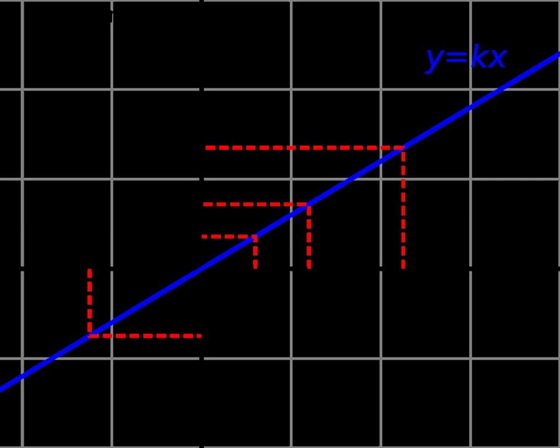If y is directly proportional to x, then the graph of y as a function of x is a straight line passing through the origin, with the slope of the line equal to the constant of proportionality k. It corresponds to linear growth.